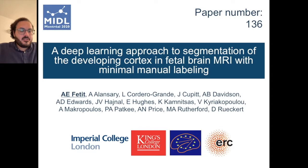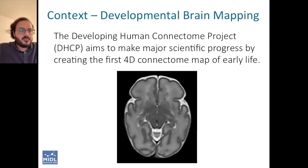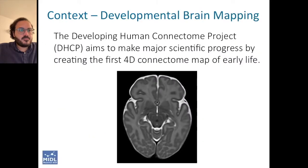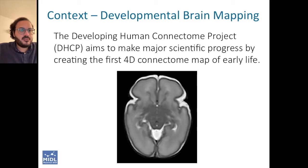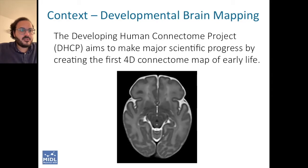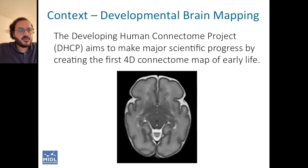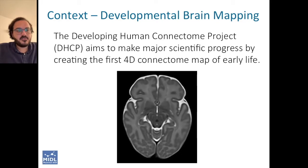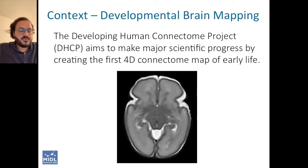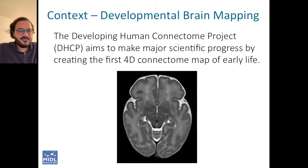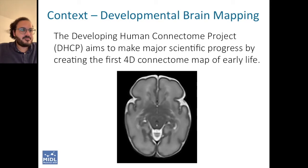The Developing Human Connectome Project aims to make major scientific progress by creating the first 4D connectome map of early life, and what this paper focuses on is segmentation of the developing cortex in fetal brain MRI.